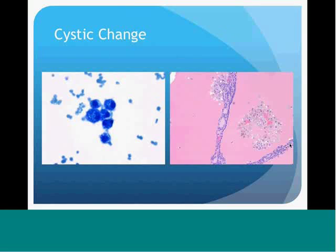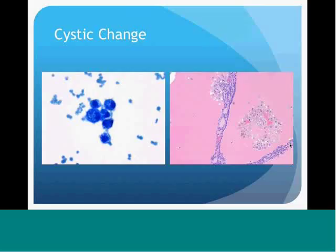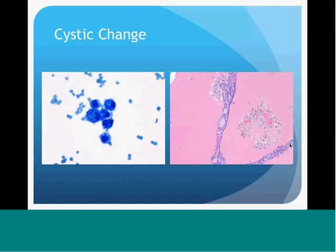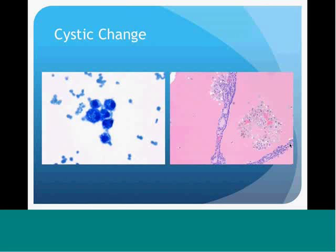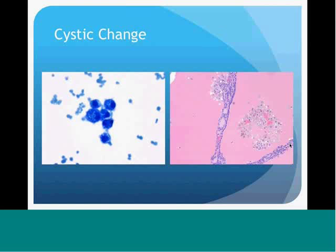Here are a couple more views of cystic change. On the left picture, you see foamy macrophages with dark granular material, which is hemosiderin on a Difquik stain. On the right, you see a combination of follicular cells—the dark purple nuclei that look orderly—the light pink is colloid, and then the brown granular cellular material consists of hemosiderin-laden macrophages floating in the colloid.